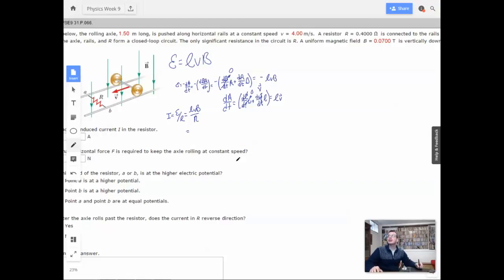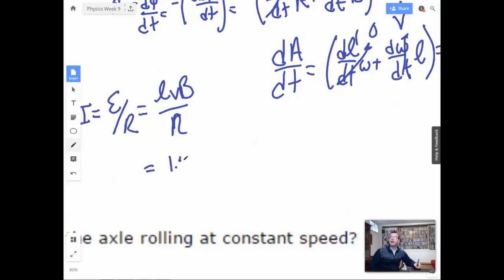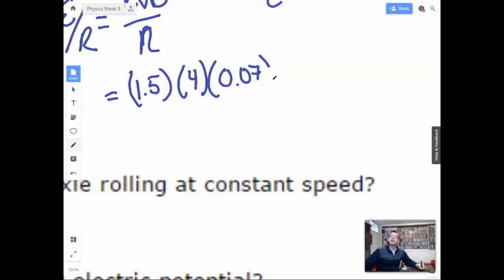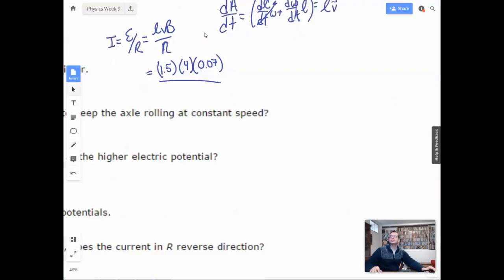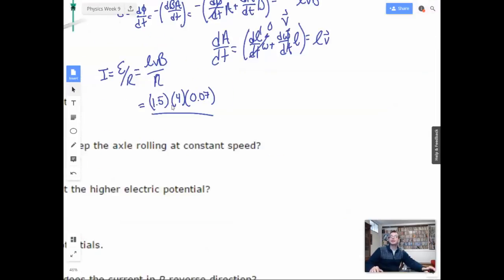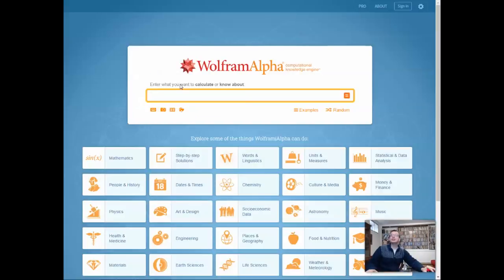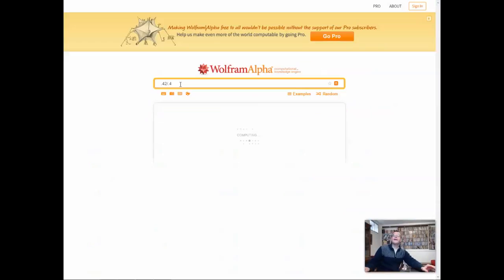Which equals, alright, so now we can actually start plugging things in. So we're going to have 1.5 times 4 times the magnetic field, which is 0.07, over resistance, which I think is 0.4. Alright, so 1.5 times 4 is 6, 6 times 0.07 is 0.42, over 0.4. So this would be 1.05, maybe. So I'm going to do 0.42 divided by 0.4. 1.05, yes! I'm so amazing.